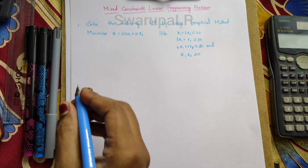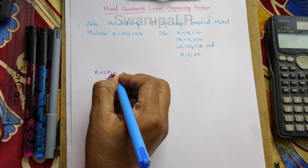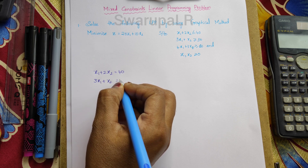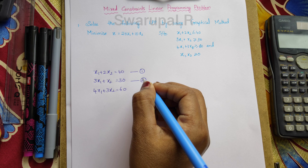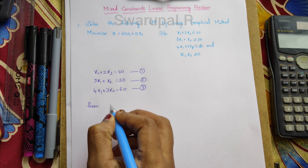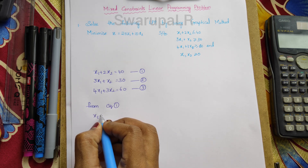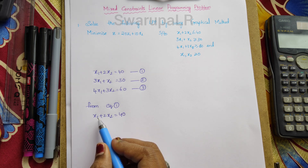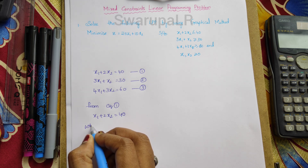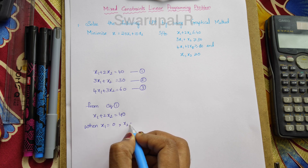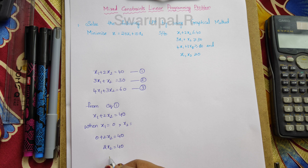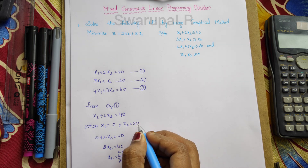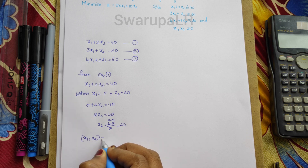This is equation 1, equation 2, and equation 3. From equation 1: x1 plus 2x2 equals to 40. We have to assume x1 is 0 and find out the x2 value. When x1 equals 0: 0 plus 2x2 equals 40, so x2 equals 40 divided by 2, which gives x2 equals 20. So the first point is x1 comma x2 equals 0 comma 20.